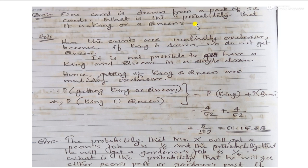One card is drawn from a pack of 52 cards. What is the probability that it is a king or queen? King and queen are mutually exclusive events, so we apply the Addition Theorem for mutually exclusive events.